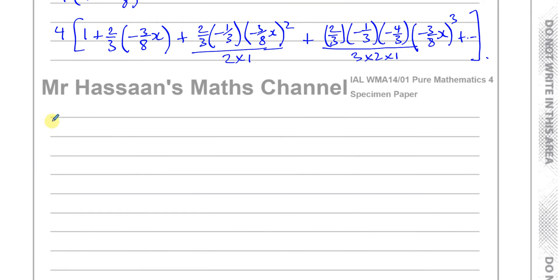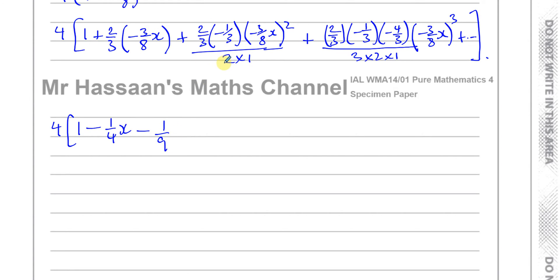Now let's simplify. For the nx term: two thirds times minus 3 over 8 x — the 3s cancel giving minus 2 over 8, which is minus one quarter x. For the x squared term: the negative times the negative squared gives a negative overall. The 2 in the numerator cancels with the 2 factorial denominator, leaving 1 over 9 times 9 over 64 x squared, which simplifies to minus 1 over 64 x squared.